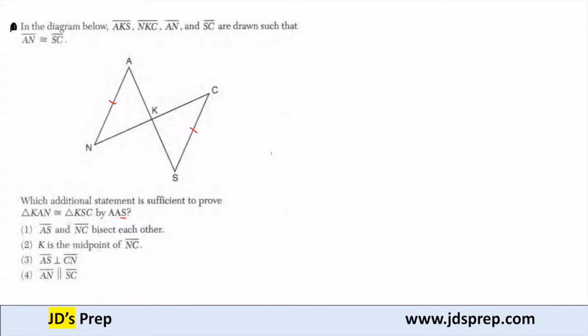Well, one of the angles that we know, using vertical angles, I know that angle AKN is congruent to angle SKC. So angle AKN, that measurement, is equal to the measurement of angle SKC because they're vertical angles.